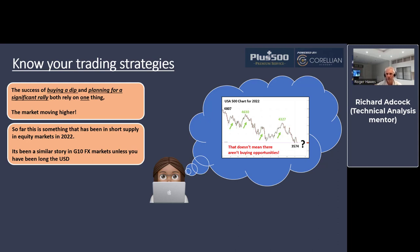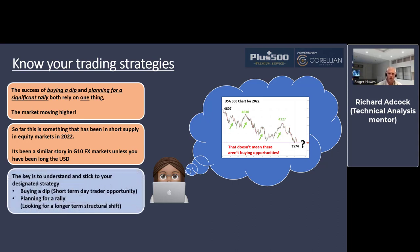We can see on the right-hand side there have been opportunities — we've got the USA 500 there — there are opportunities to buy dips, but at no point in time have we seen the base of this move. So we do have a buying opportunity for a short-term strategy, but if we were trying to find the base of this market and look for that big reversal, we would have been struggling most of the year.